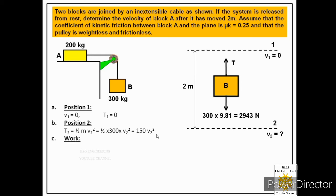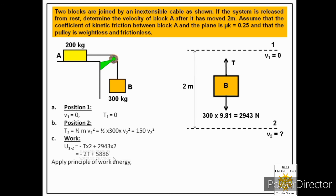Work done on block B: weight acts in the direction of motion (positive work) and tension acts against the motion (negative work). So work done = −T×2 + 2943×2 = −2T + 5886. Applying the work-energy principle: 0 + (−2T + 5886) = 150v₂². This is Equation 2, also having two unknowns T and v₂.